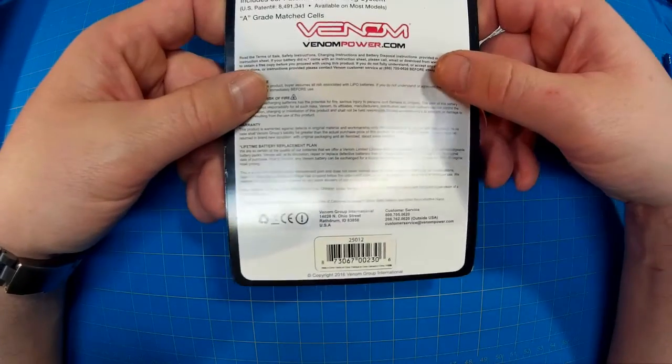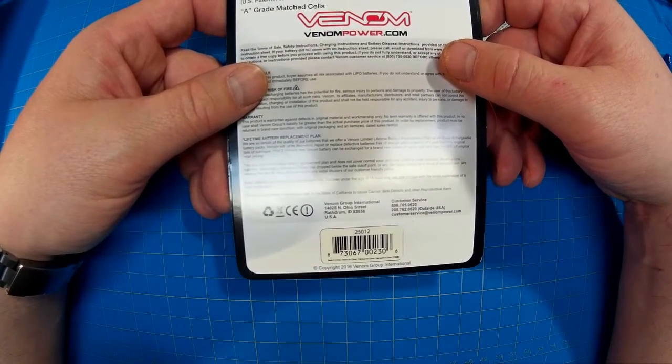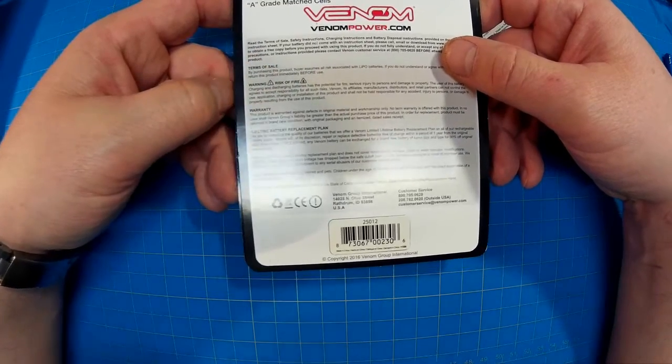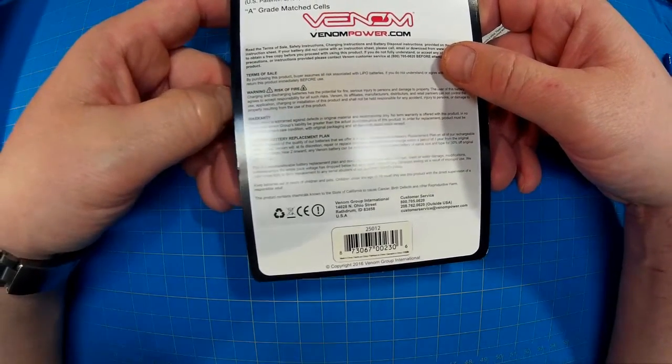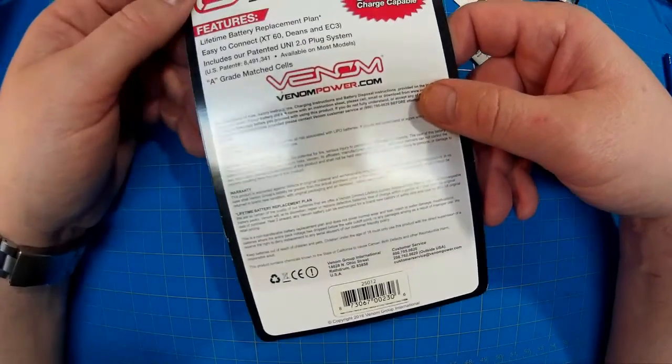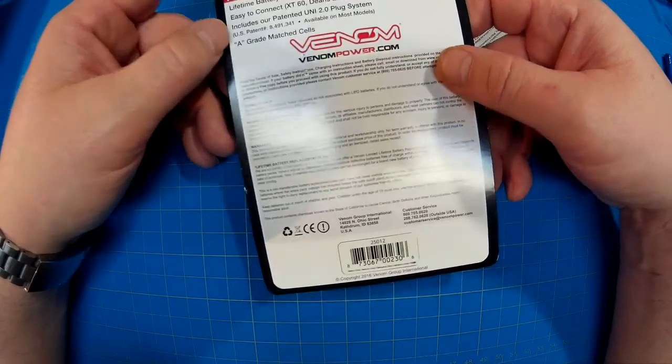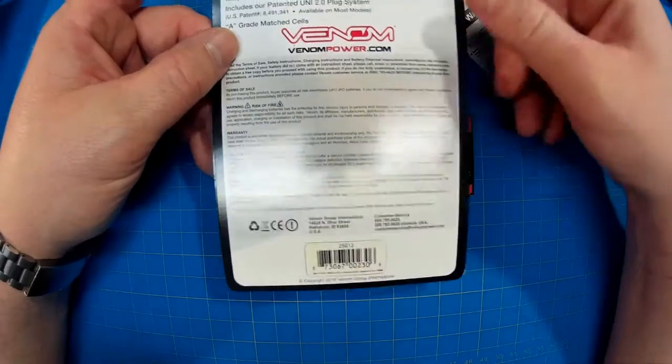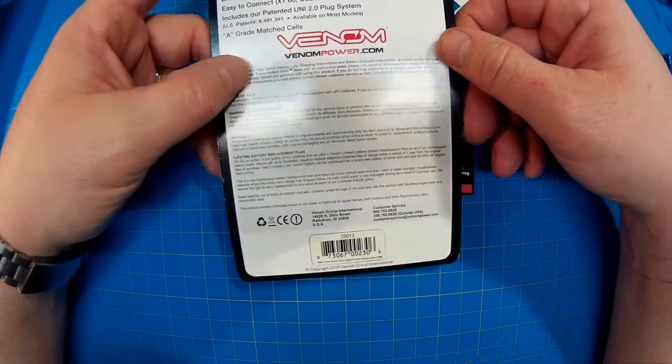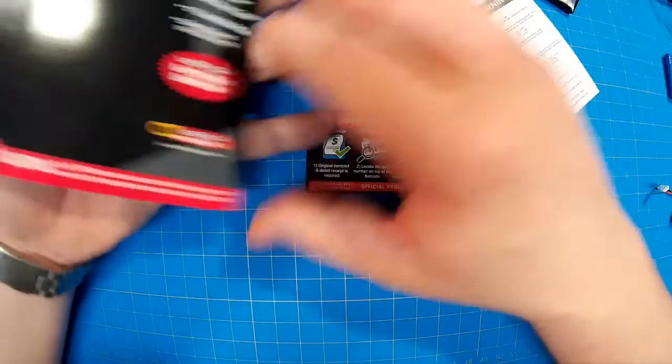I got an automated response and the response said to reply to someone at AtomicRC. So, or no, I got a response from AtomicRC. So I sent, there was a link to open a ticket. So I clicked the link and I opened a ticket. So we'll see. And I'll update the description on this video when I get some feedback.